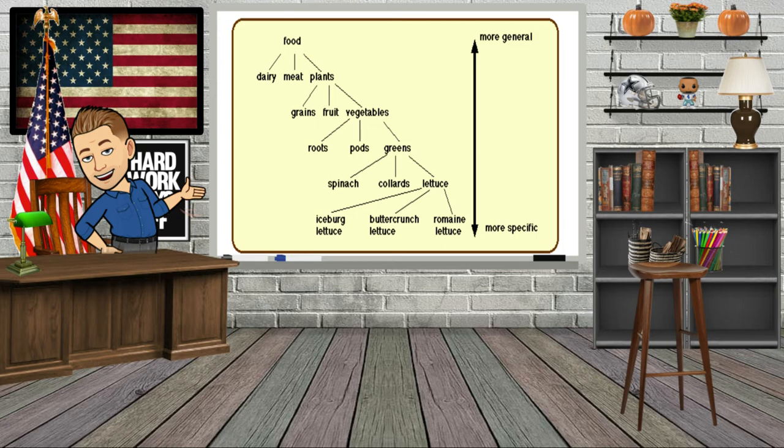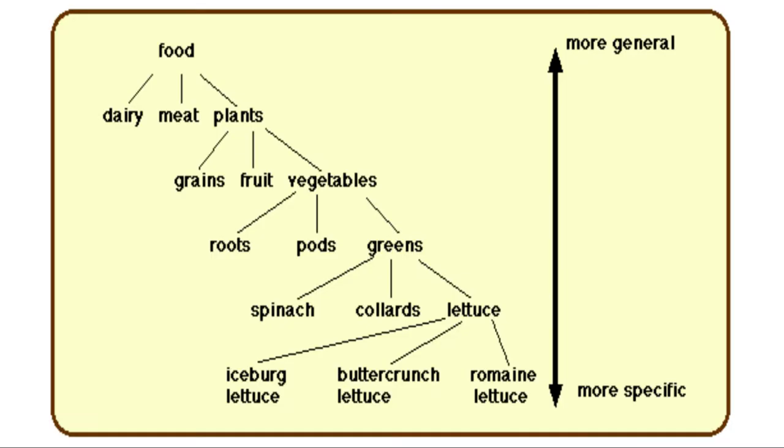You can see here on my little whiteboard we have kind of a tree going from general to specific. I'm going to go ahead and zoom in here for you. Take a look — food is at the top. Obviously, food is extremely general. You can talk about dairy, then meat, and plants.